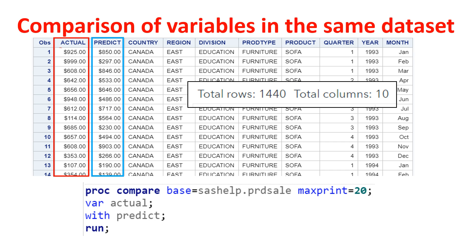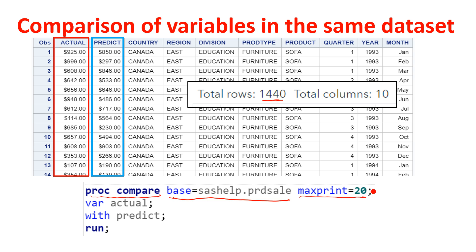So this is the kind of syntax we can use. You can start the same way with proc compare and provide the base table — you don't have to provide a second compare table. Just put the first table name. Here I have given max print 20 because this table has 1440 observations, which would be quite huge, so I'm limiting the print to the first 20 observations.